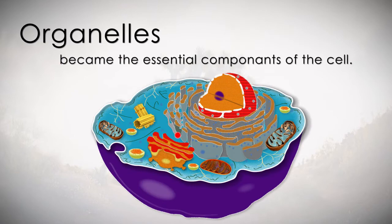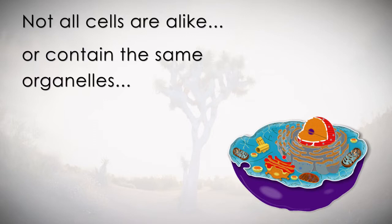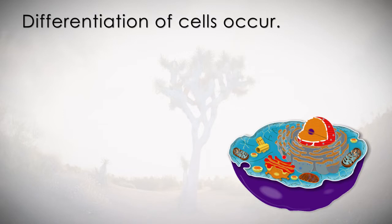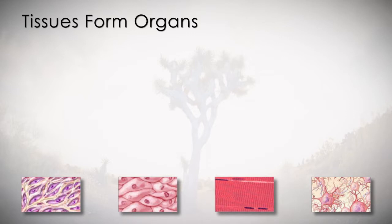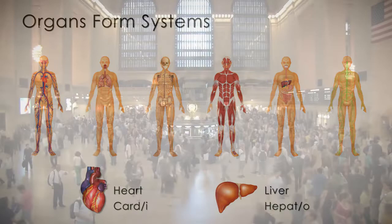The organelles became the essential components of the cell. Not all cells are alike, or contain the same organelles, or even continue reproducing, as you will later learn as we move through the various organ systems. The differentiation of cells occurs, and like cells will come together and create the four basic tissues for the human organism. These tissues will further become more specialized to form organs such as the heart or the liver. These organs will come together, working cooperatively and uniformly to form organ systems, working in harmony to produce what scientists have labeled as the living human organism.